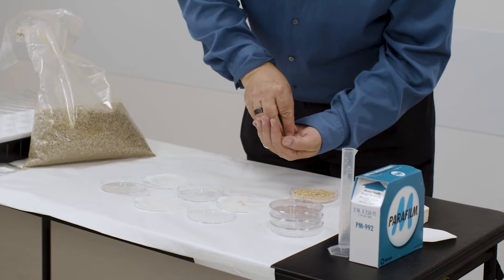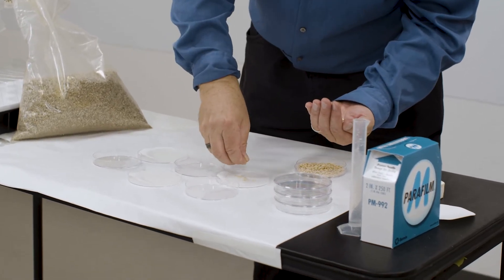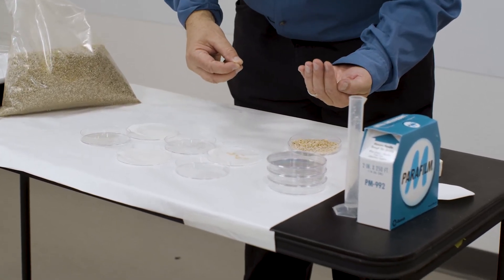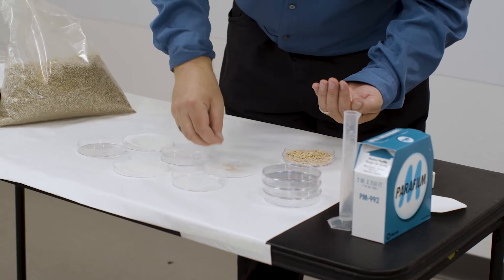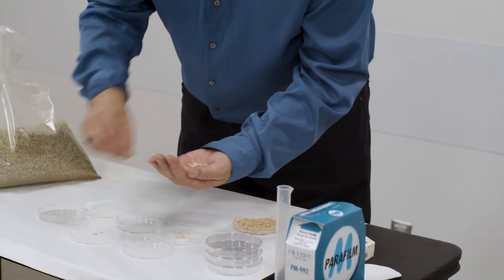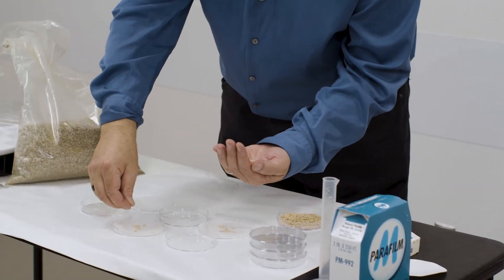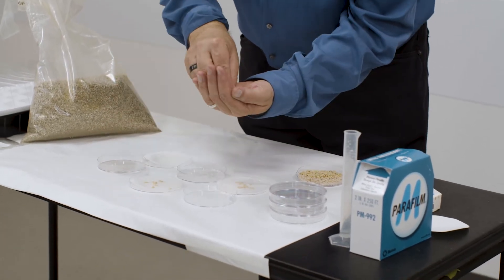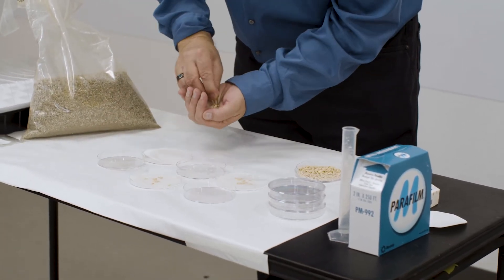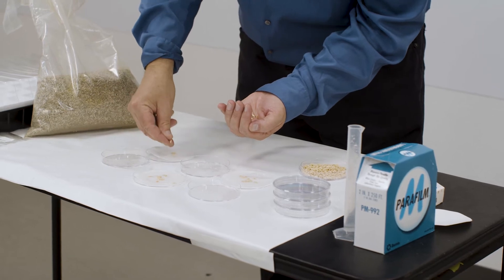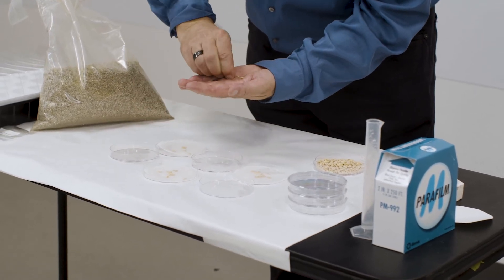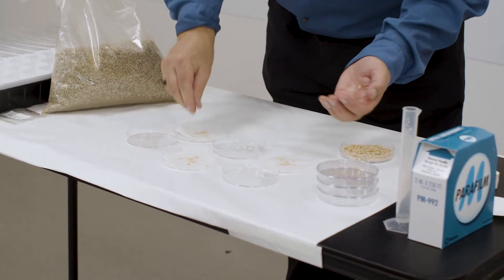So what we're going to do, I'm going to put, I like numbers that make the math easier. So I'm going to put 10 seeds in each of these petri dishes. Let's get the third one.